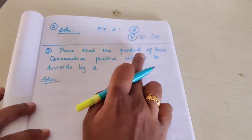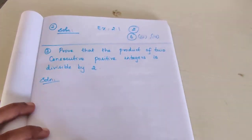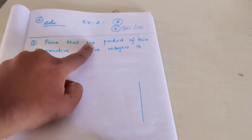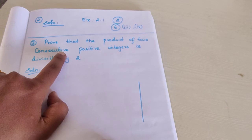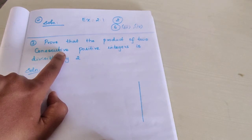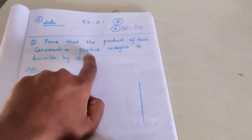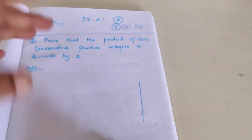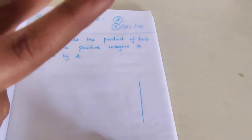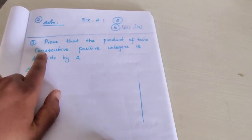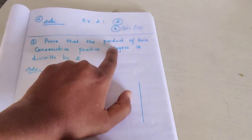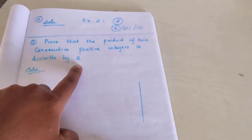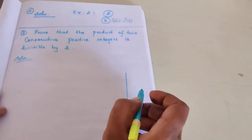Third question: Prove that the product of two consecutive positive integers is divisible by 2. Let's do practically by applying some numbers. Consecutive means the next number — for example, three consecutive numbers after five are six, seven, eight. We need to take two consecutive positive integers and find their product. Taking 5 and 6: 5 into 6 equals 30. Is 30 divisible by 2? Yes — 30 divided by 2 gives 15 with remainder 0, so it is divisible by 2.